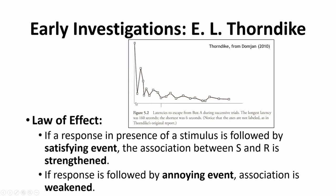A graph of typical Thorndike results shows time to escape on the y-axis and successive trials on the x-axis. The first time in the box, it would take the organism a very long time to figure out how to escape. Then they got out much quicker, it bounced around, but the general trend was they started slow and eventually learned to get out fairly quickly. Towards the end, if left in the same box doing the same trials, they could escape almost immediately once they'd learned the trick.